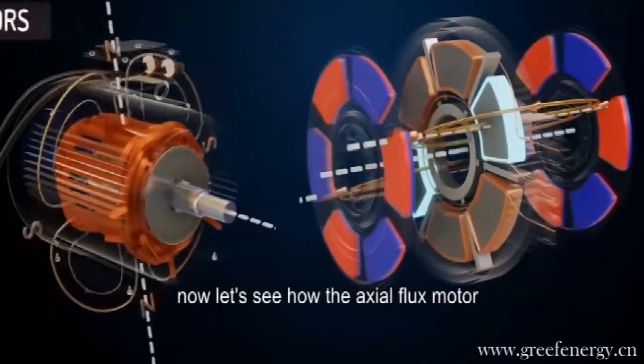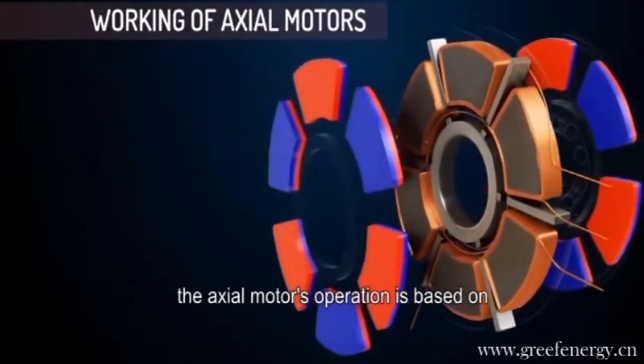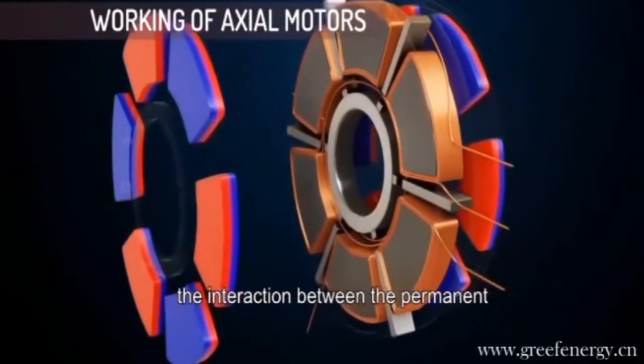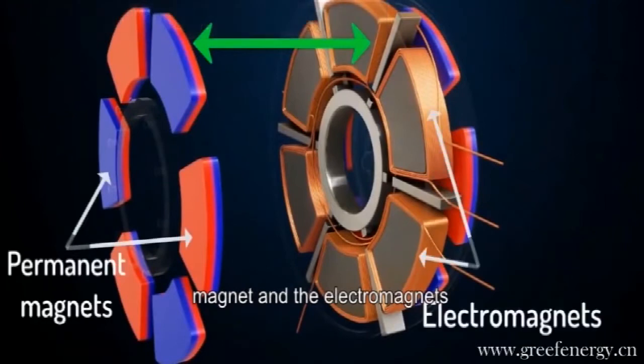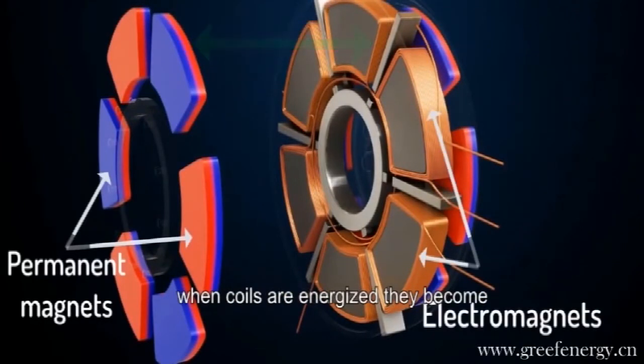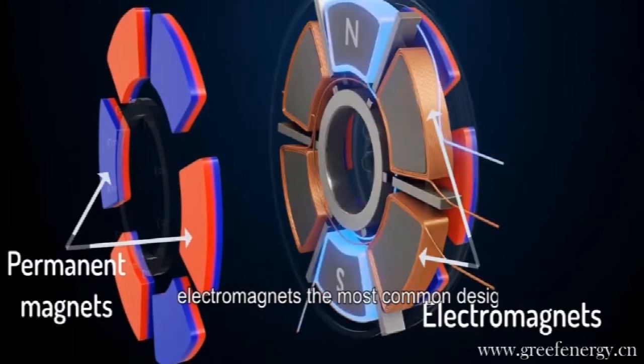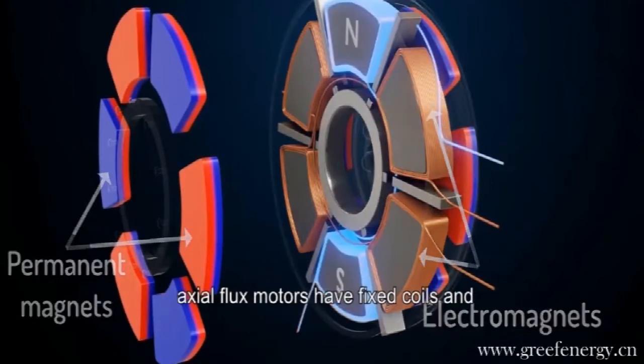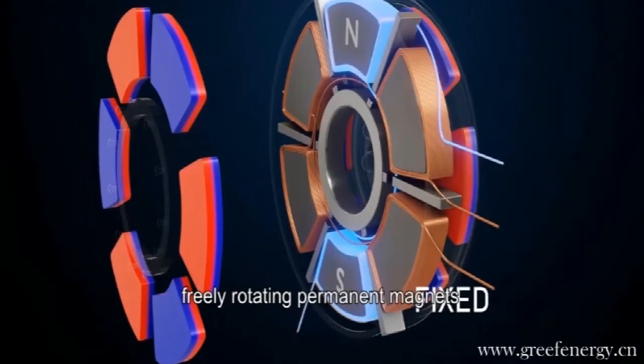Now, let's see how the axial flux motor actually works. The axial motor's operation is based on the interaction between the permanent magnet and the electromagnets. When coils are energized, they become electromagnets. The most common design of axial flux motors have fixed coils and freely rotating permanent magnets.